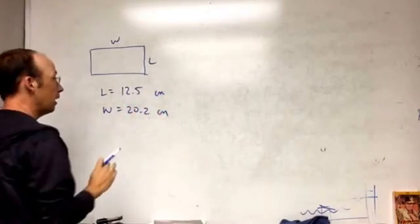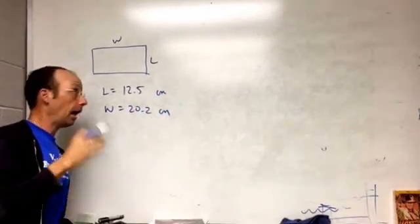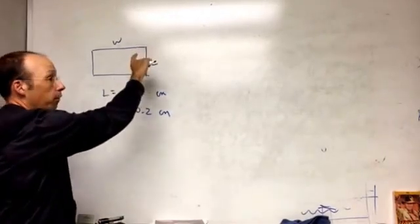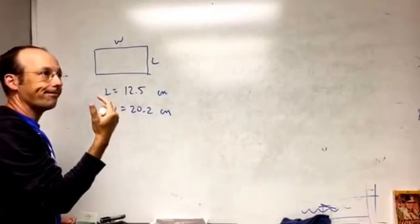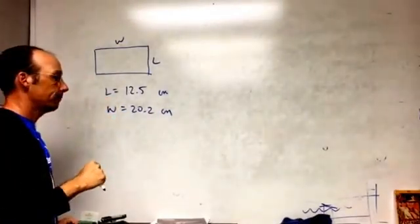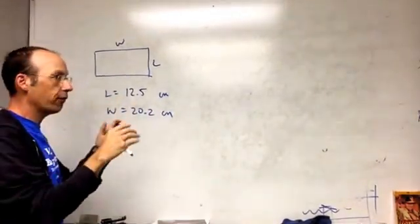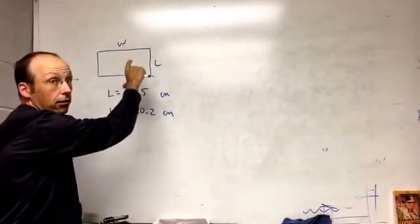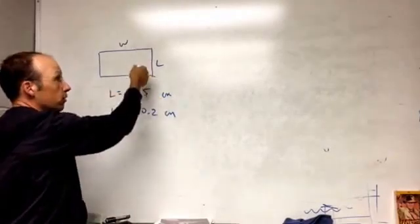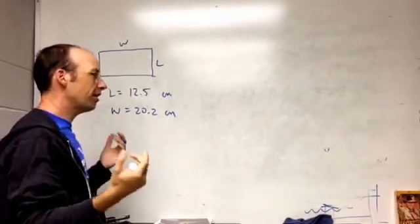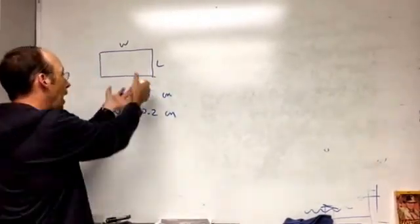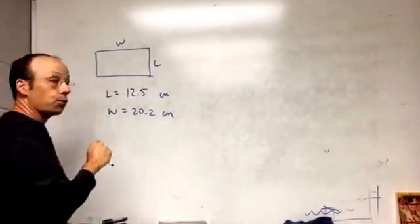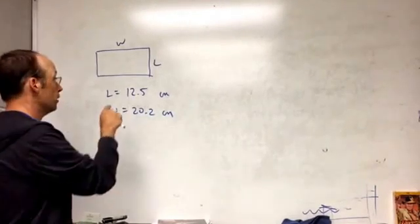And the width is 20.2 centimeters. Now that's not the answer, I can't do that. If I measure that length right there and I get 12.5, it's kind of like trying to get one value for something that's kind of fuzzy. If I measure the length of that thing along here I might get different values or the measurement tool may not be perfect. There's all these things that come into play that say I can't just say 12.5 and boom that's it. I have to do something and that's where the uncertainty comes in.